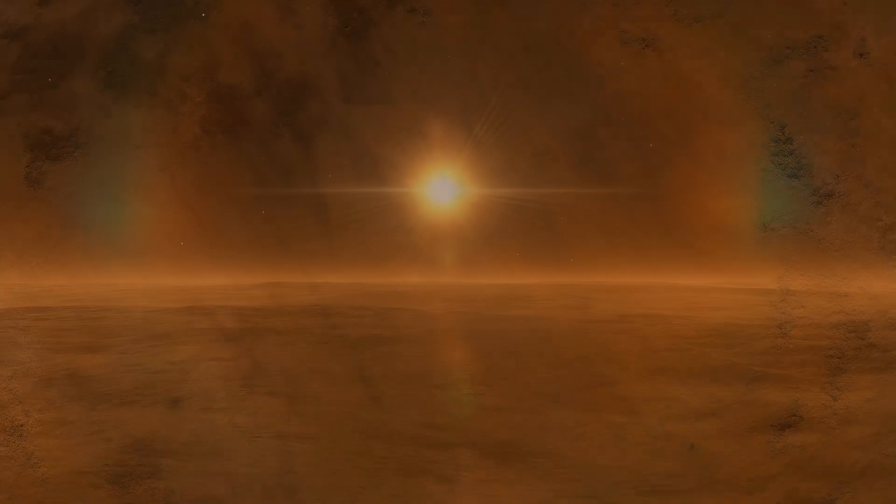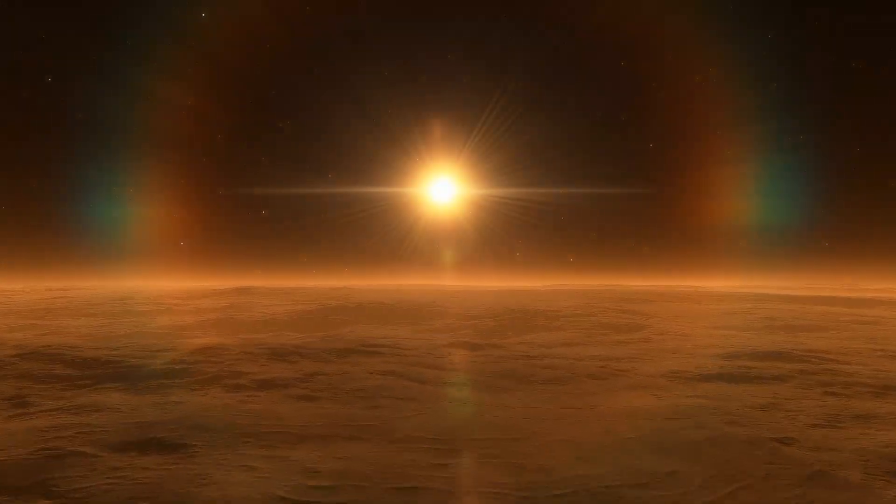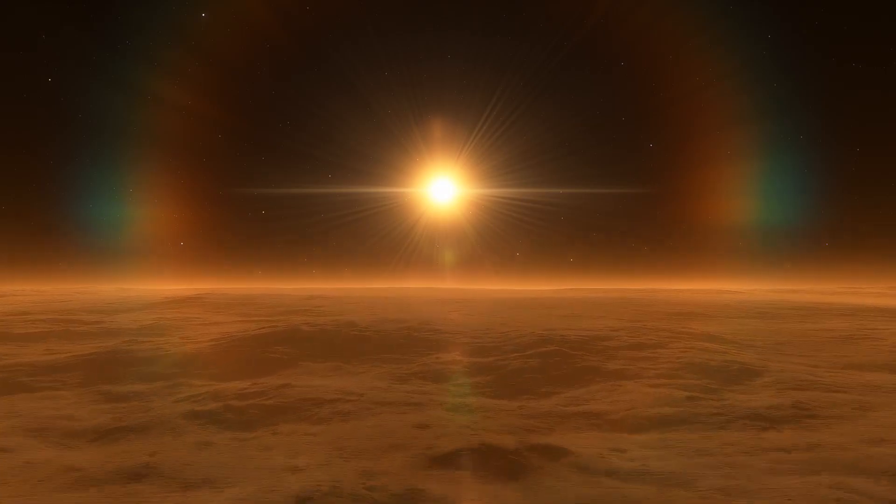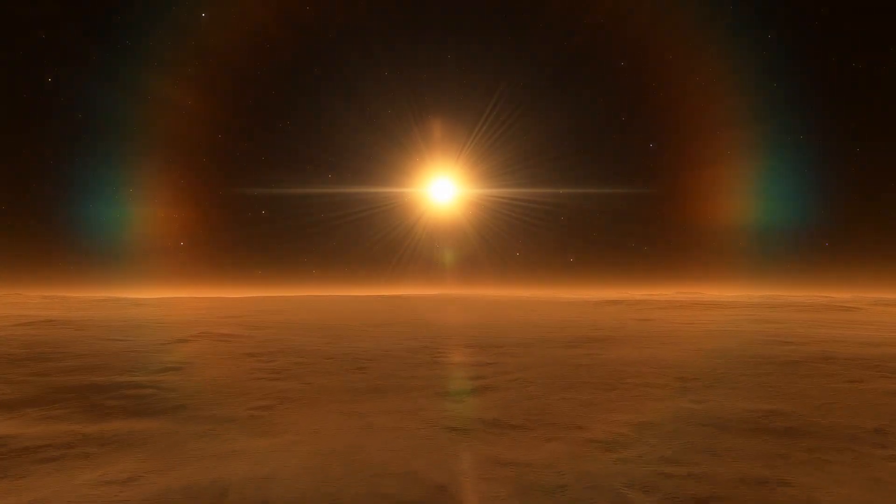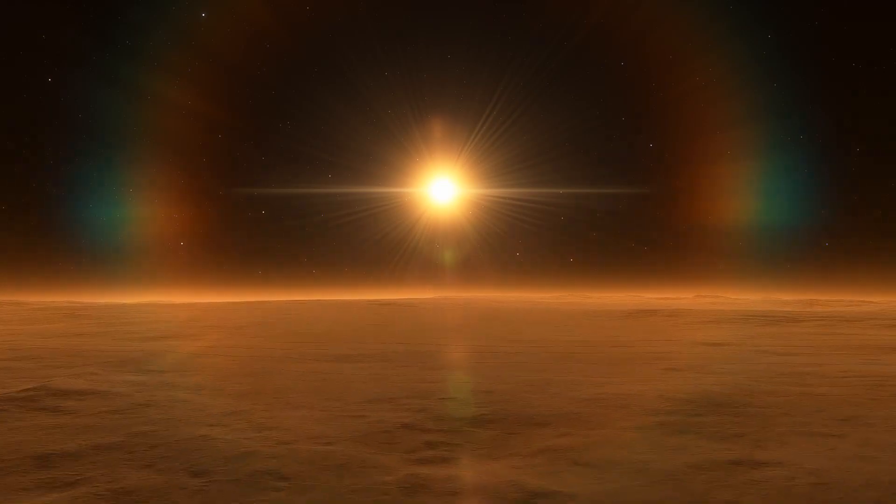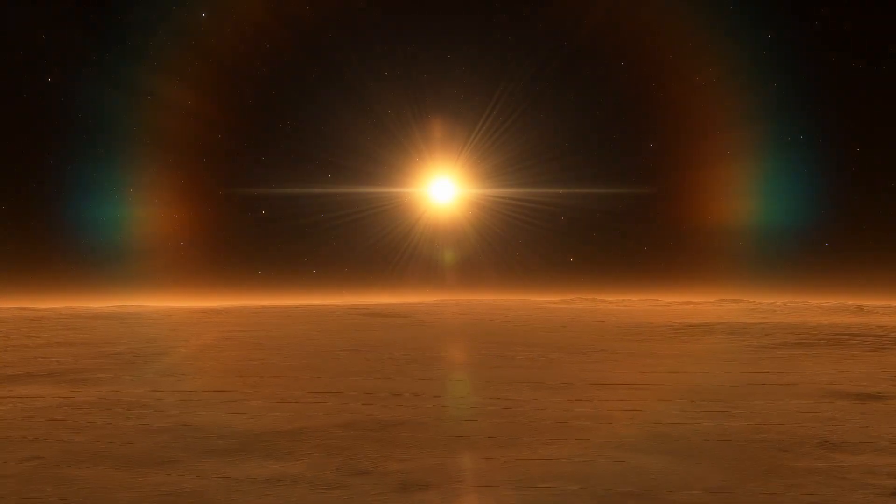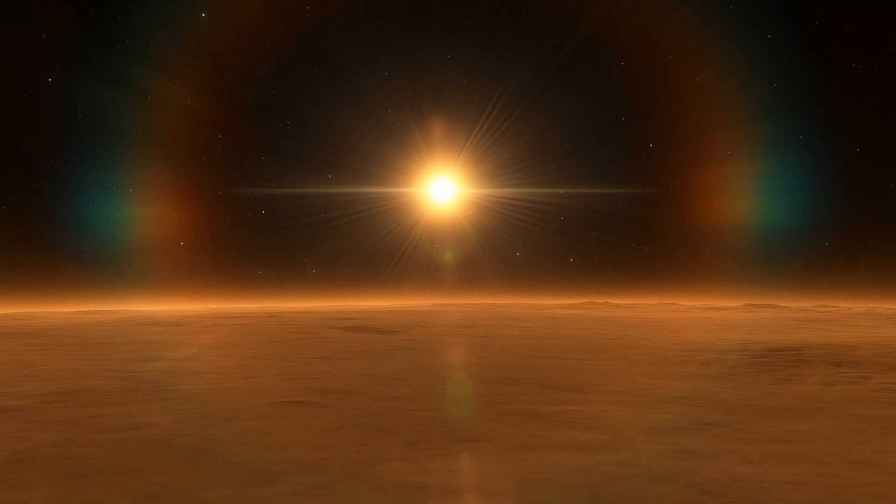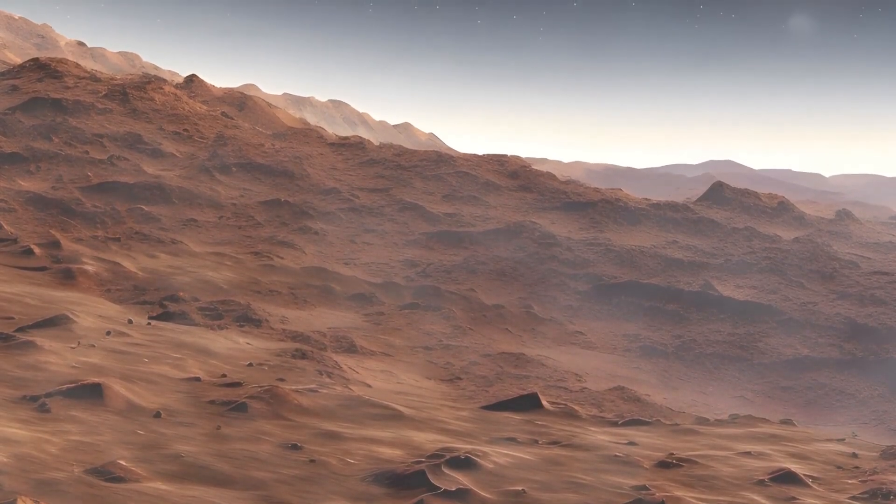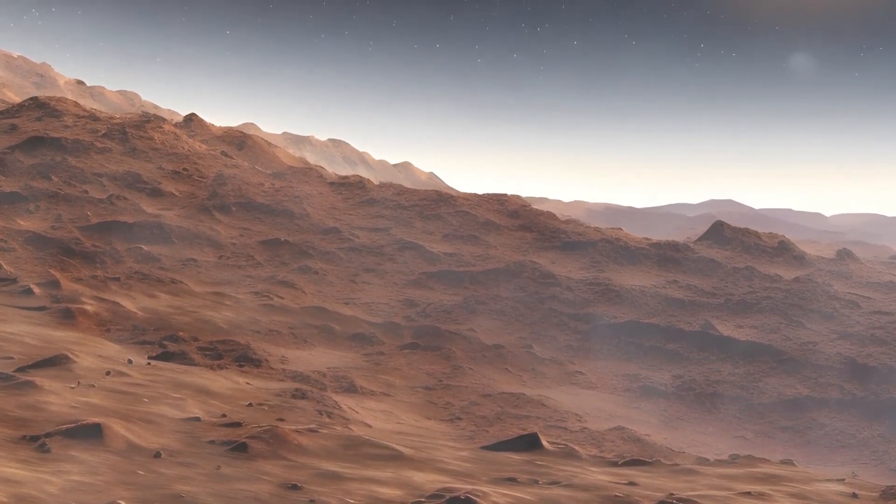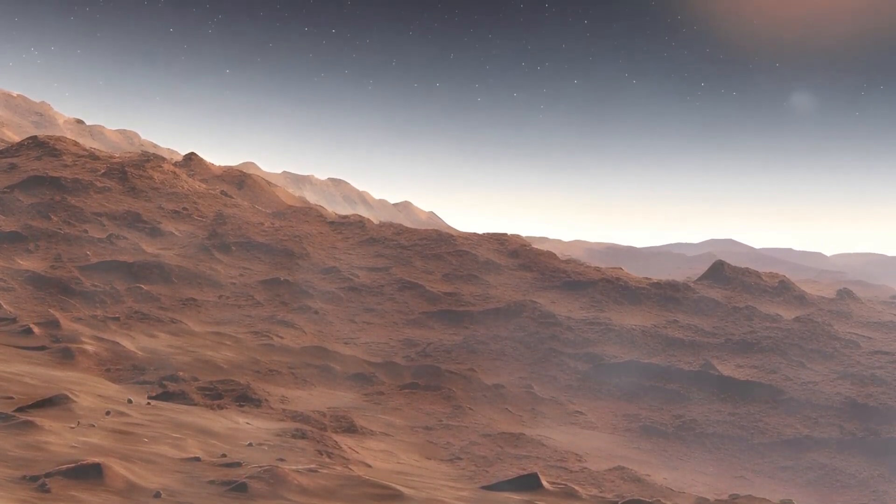According to the estimate, Proxima Centauri b currently receives 60 times more high-energy radiation and 400 times more X-ray radiation than the Earth. This is despite the fact that this exoplanet does not have a magnetic field and the total amount of radiation received since its formation exceeds from 7 to 16 times the amount of radiation received by the Earth.